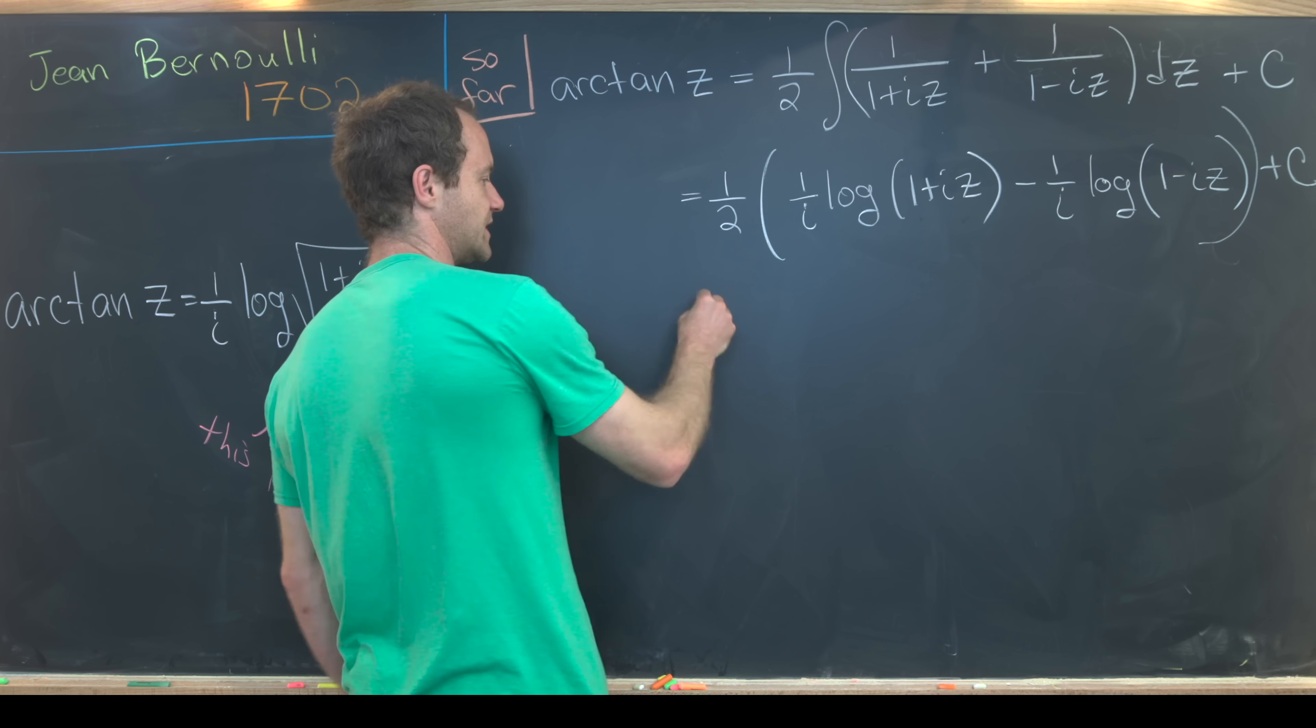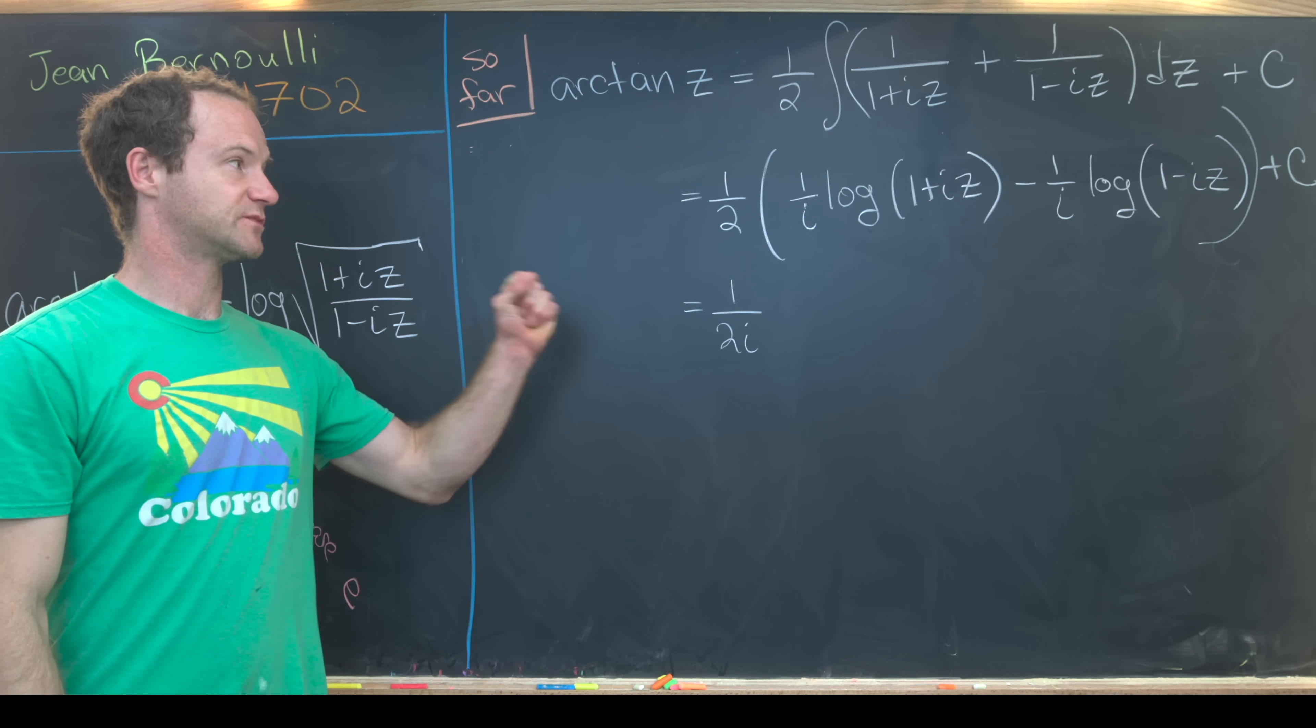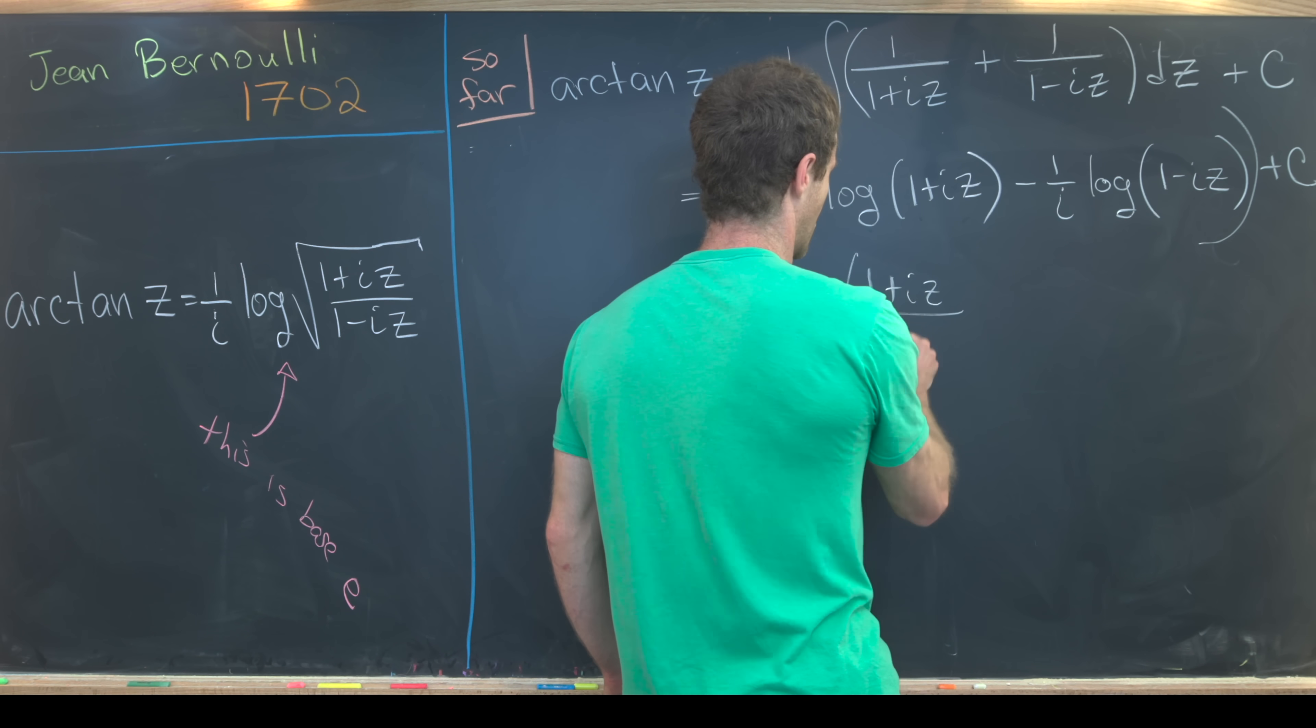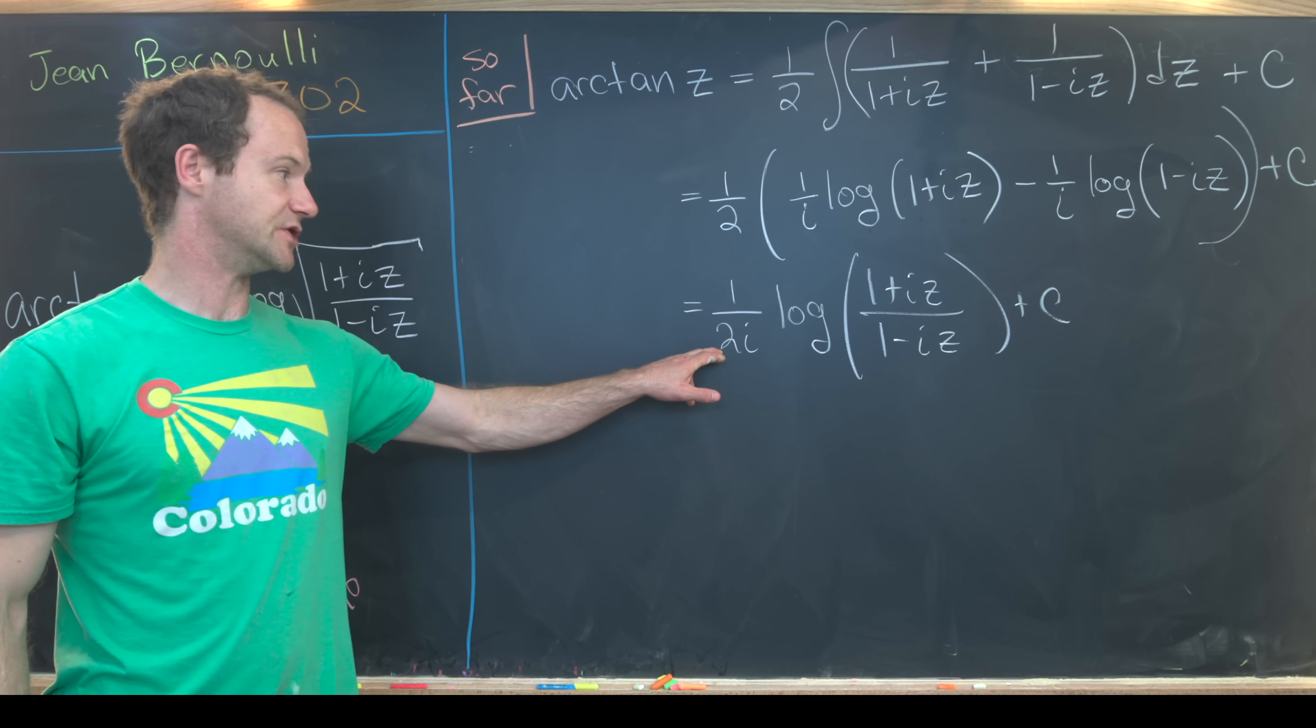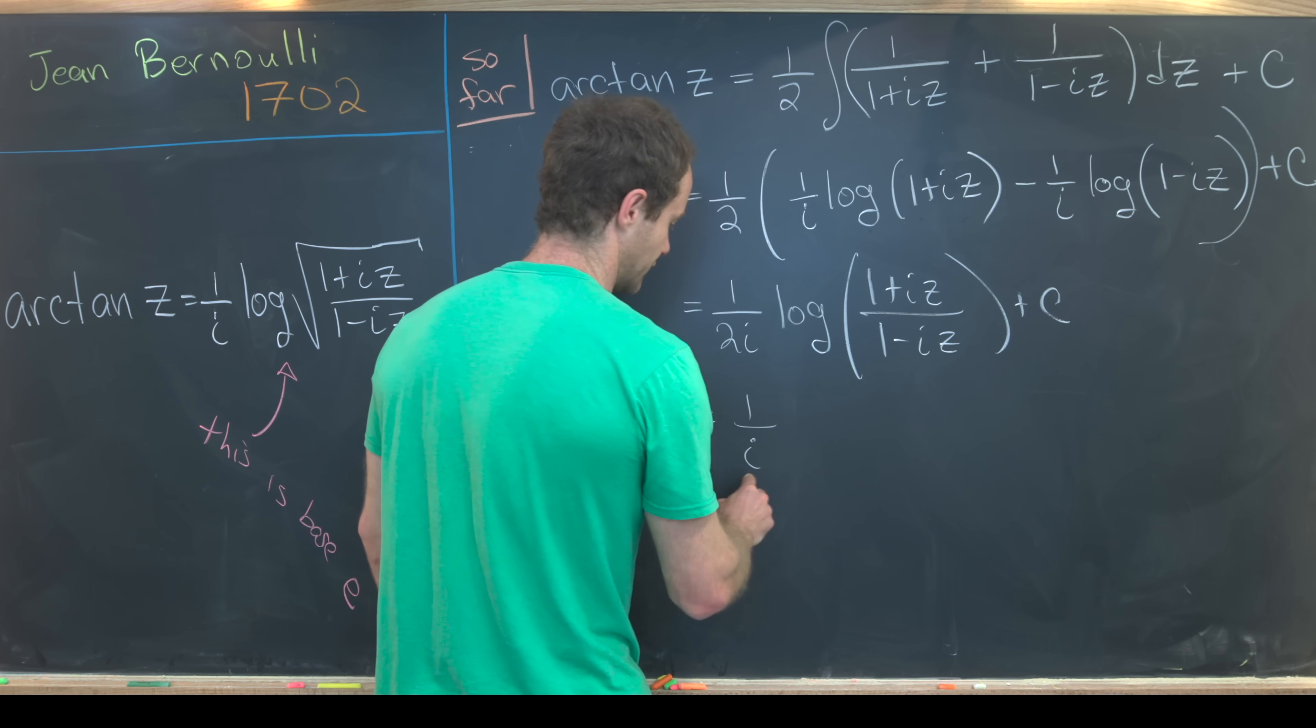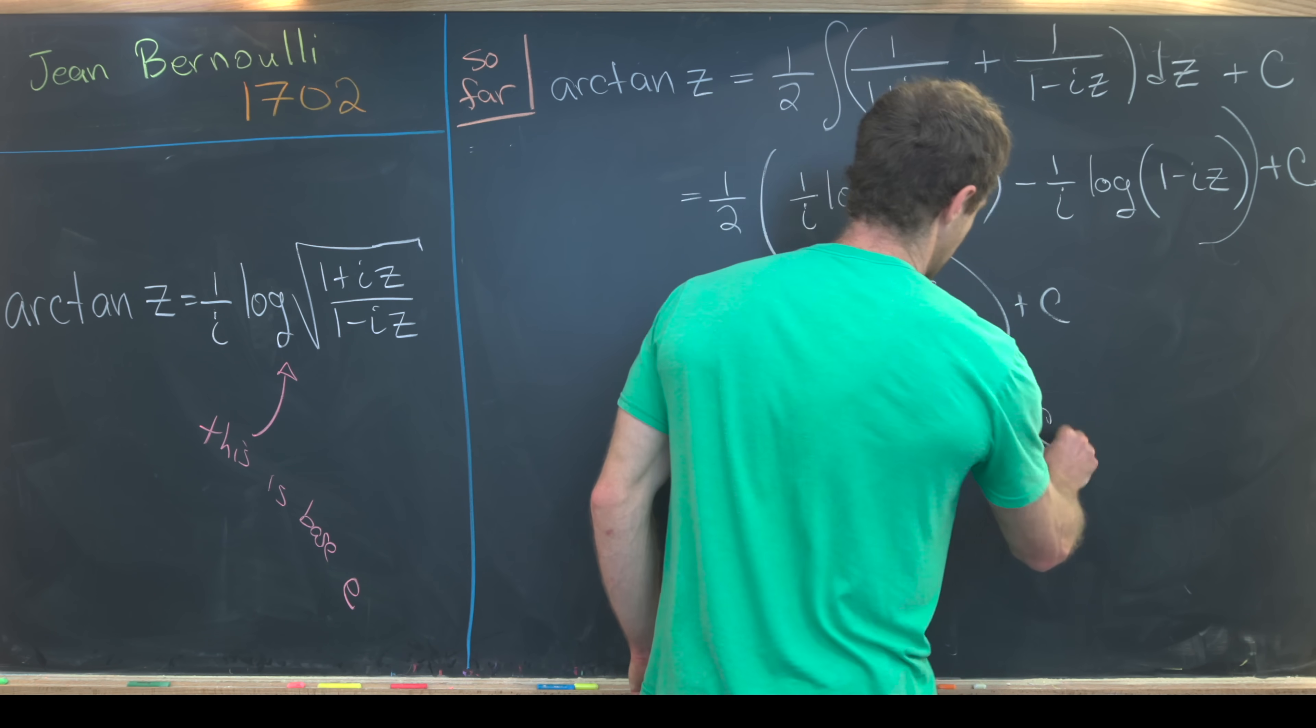All of that stuff is being multiplied by half. Now we've got one over 2i. We can push those together using logarithm rules. If you're subtracting logarithms, it's the same thing as dividing. So we've got the log of (one plus iz) over (one minus iz), and then plus a constant. And then finally, we can bring this two into a one-half power here. But a one-half power is the same thing as the square root. So we've got one over i, the logarithm of the square root of (one plus iz) over (one minus iz) plus a constant.